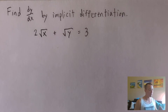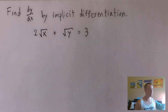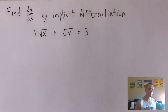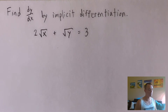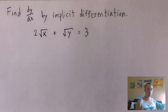Here's the problem we're gonna be going over today. We're gonna find dy/dx by implicit differentiation, given this equation here: two times the square root of x plus the square root of y equals three. The first thing you wanna do — and this is a really helpful trick to keep in mind — is to look at your equation and decide which letter is your variable and which letter is your function.